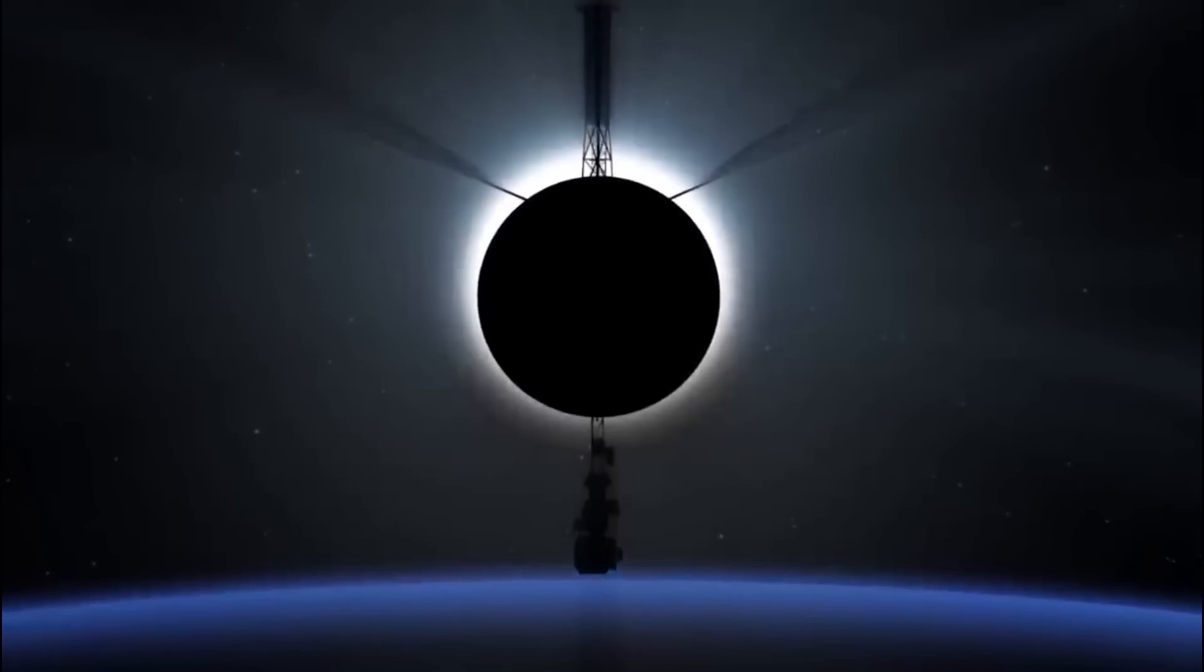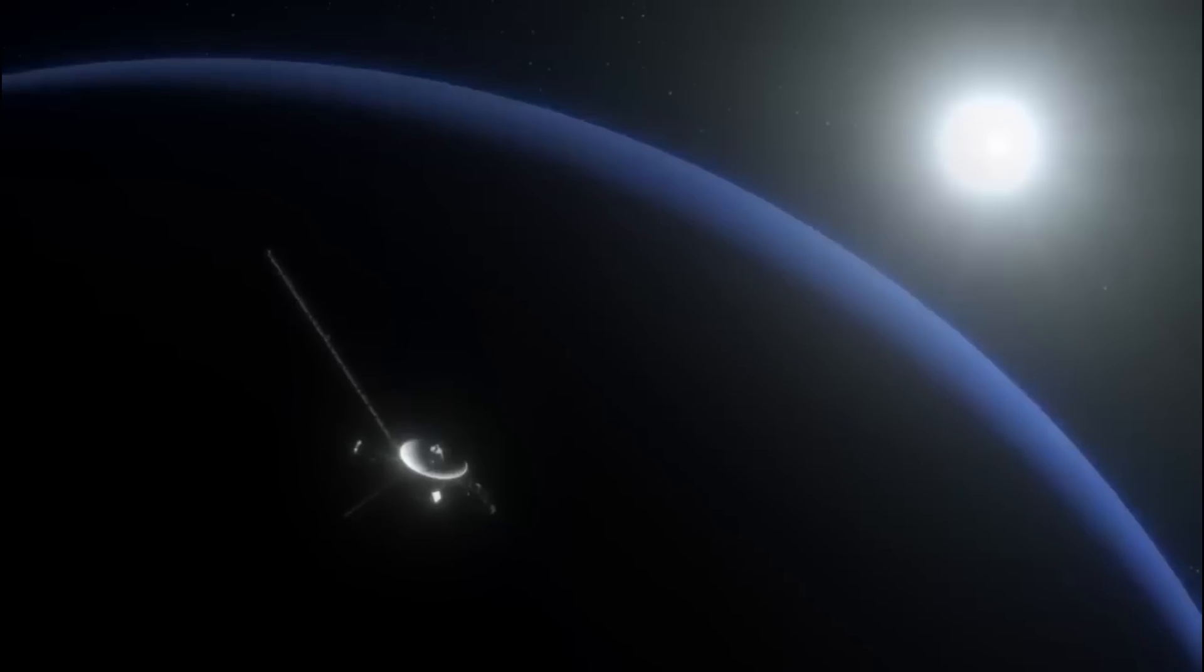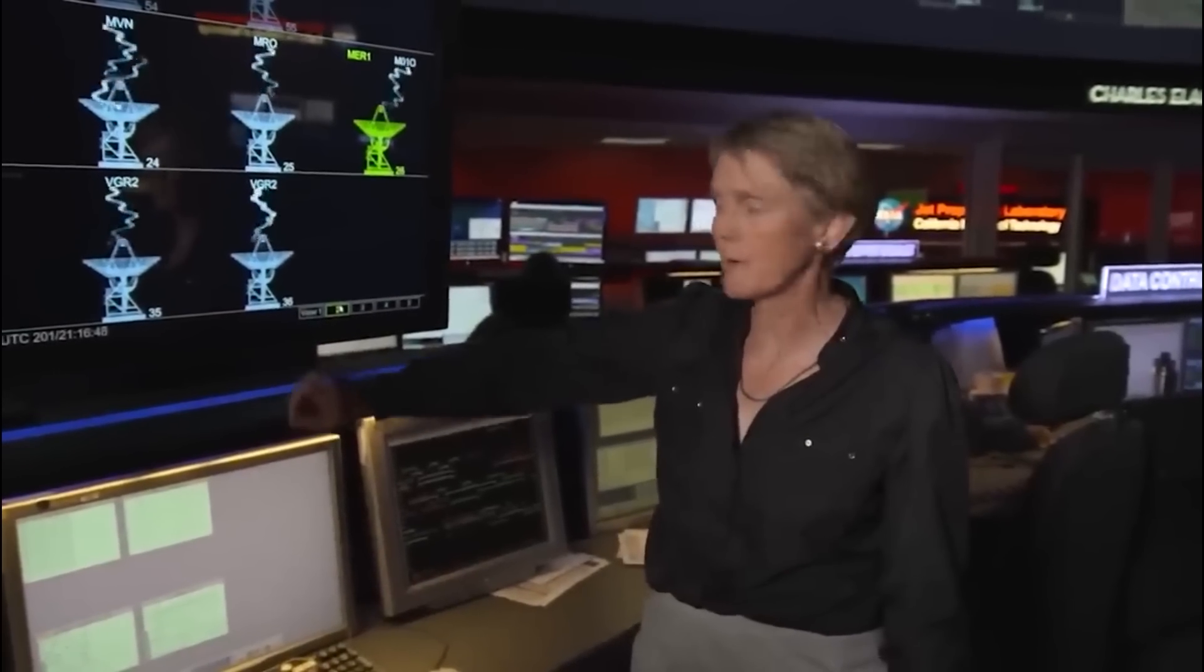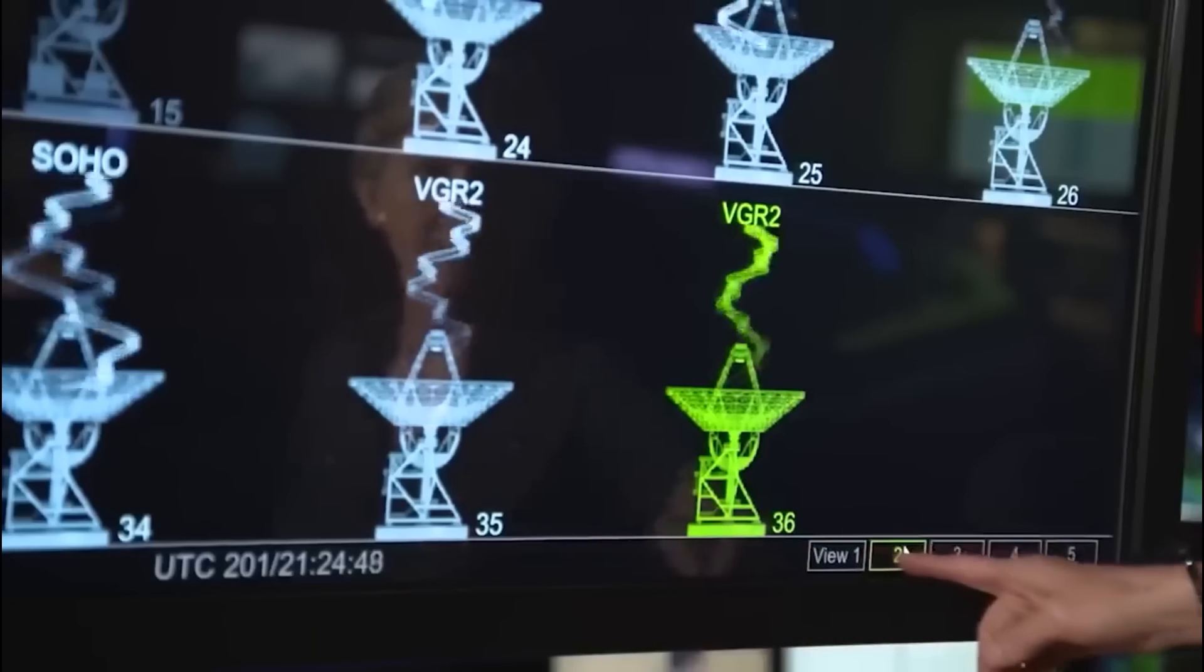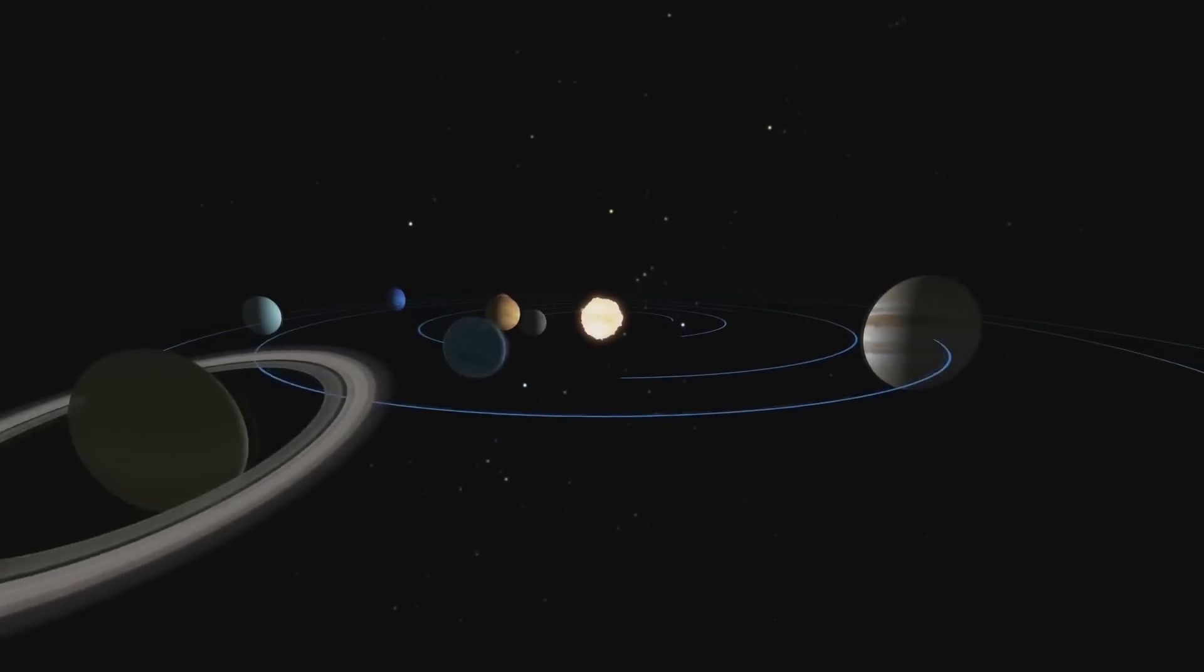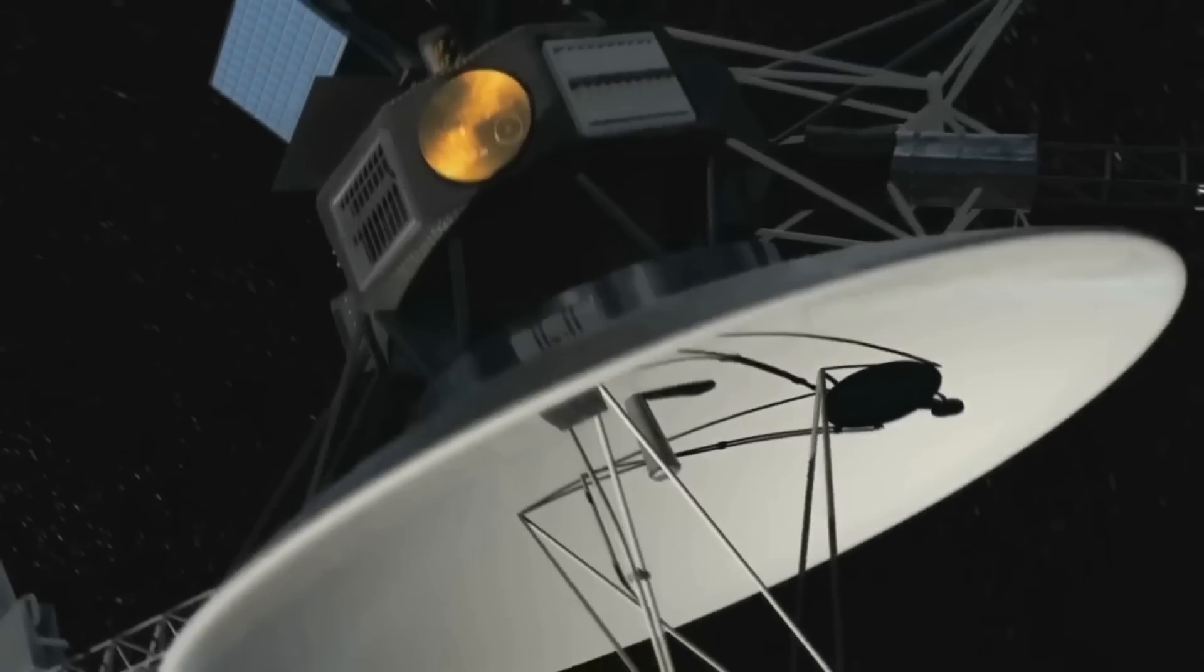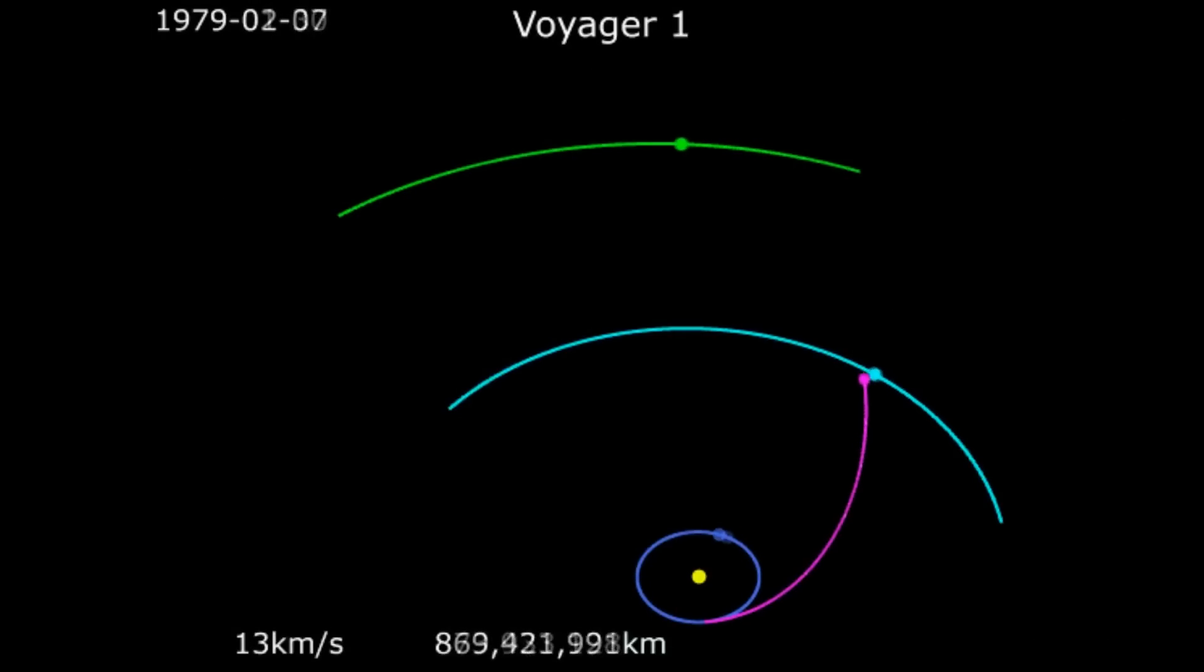Both probes are traveling in opposite directions and are farther from Earth than any other. Scientists reported that Voyager 1 had detected a hum related to waves in localized regions of gas in the nearly empty space between stars.